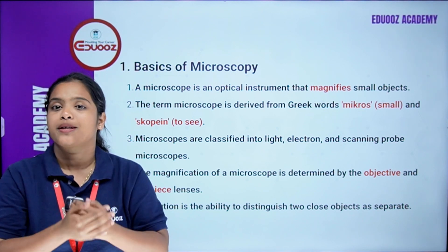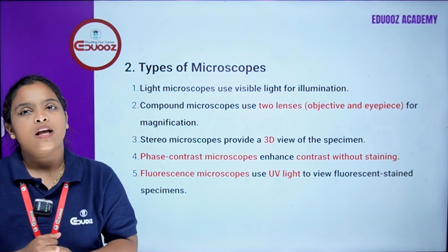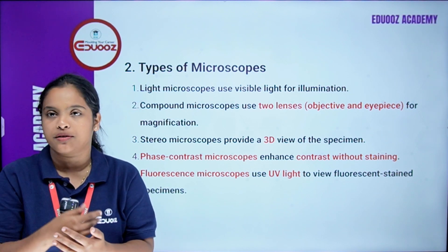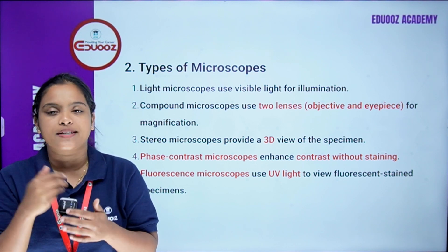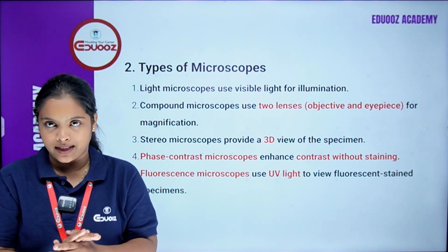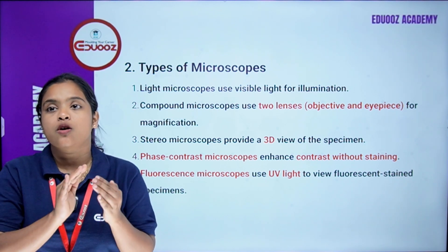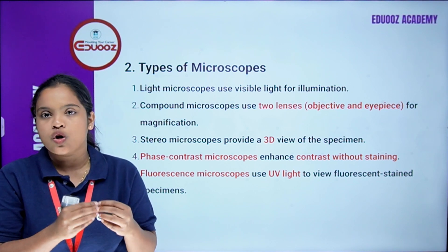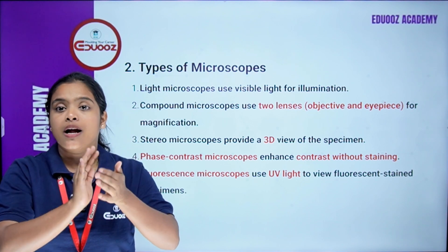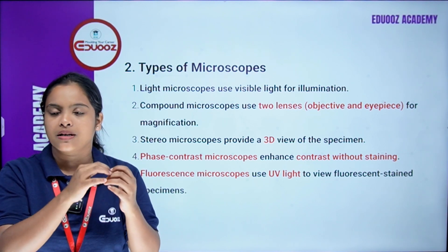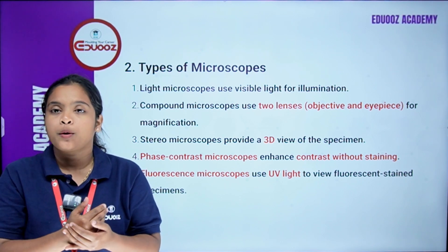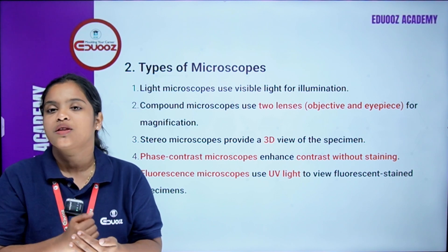Light microscopes use visible light for illumination. The compound microscope has two lenses: objective and eyepiece, for magnification. The stereo microscope provides a 3D view of the specimen. The phase contrast microscope enhances contrast without staining.